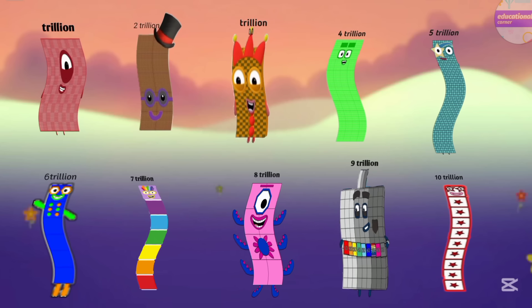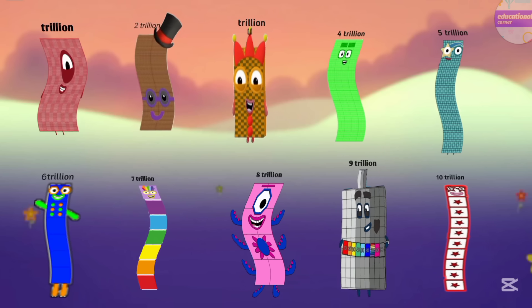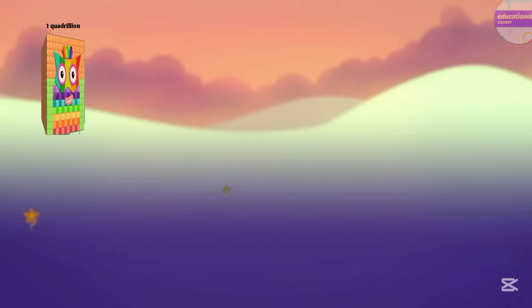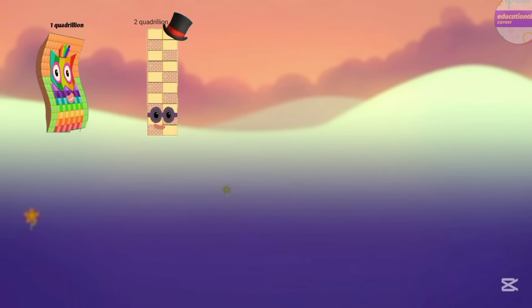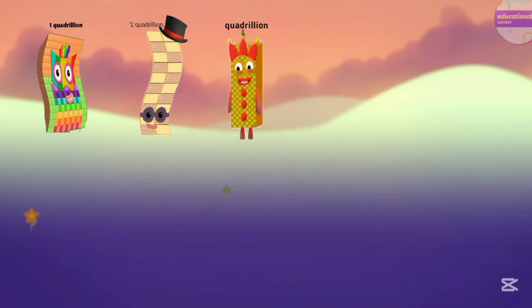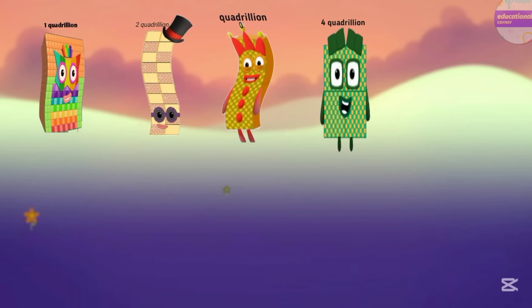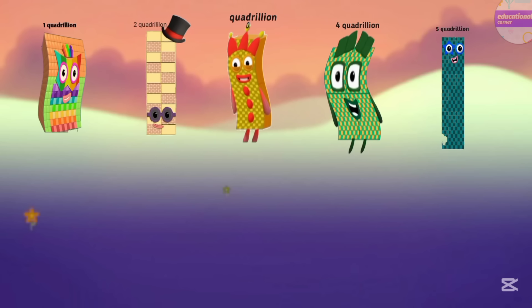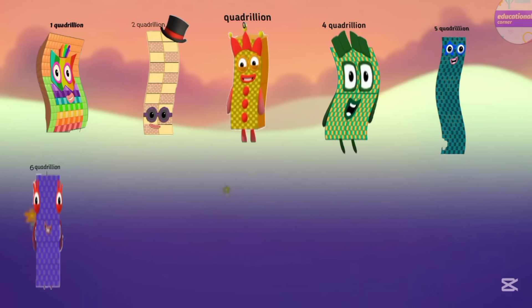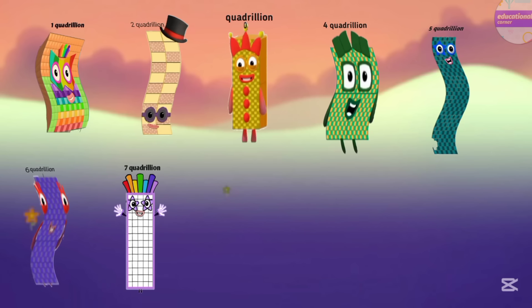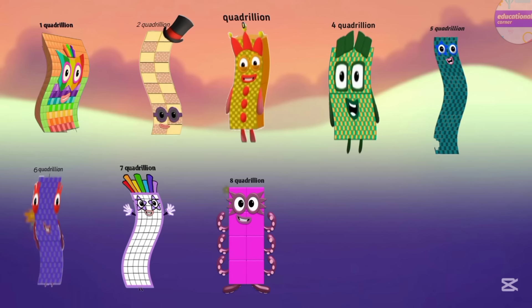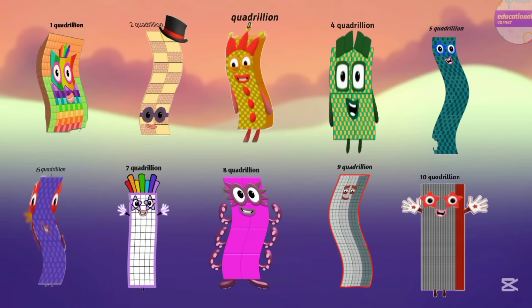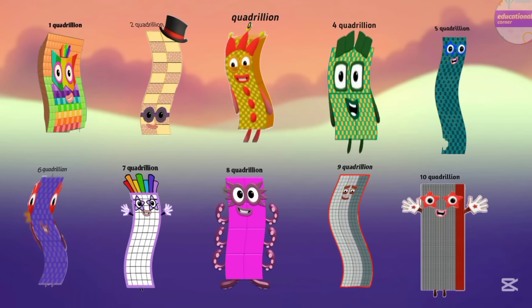After trillion, what's the next number? It's quadrillion. One quadrillion, two quadrillion, three quadrillion, four quadrillion, five quadrillion, six quadrillion, seven quadrillion, eight quadrillion, nine quadrillion, ten quadrillion.